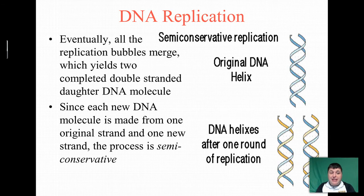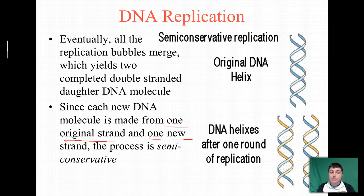Eventually, all of the replication bubbles will merge, which will give us two completely double-stranded daughter DNA molecules. Since each new DNA molecule is made from one original strand and one new strand, the process is said to be semi-conservative.